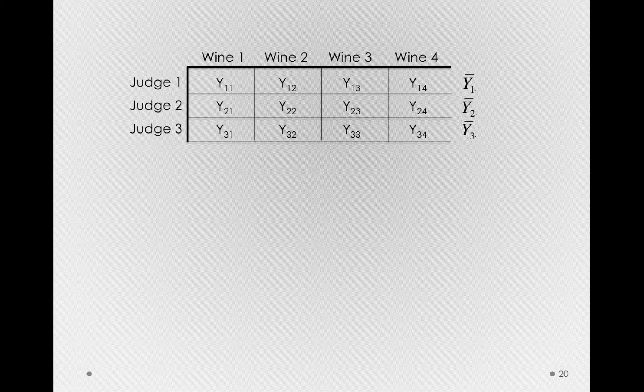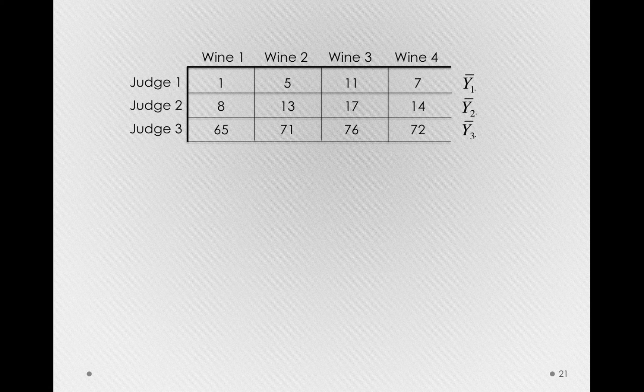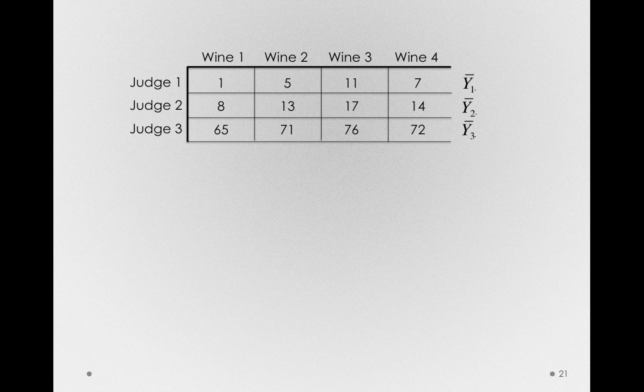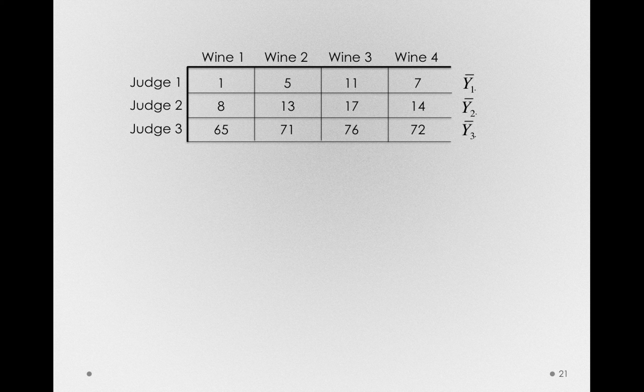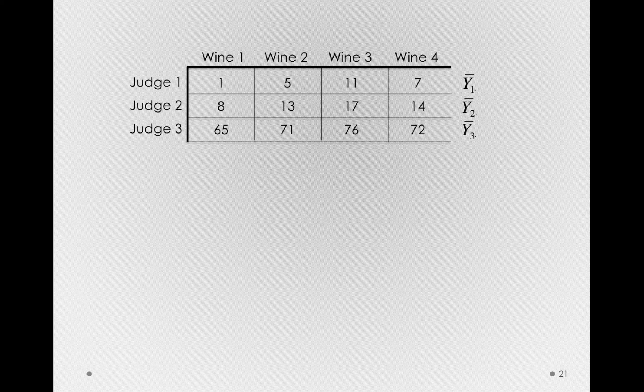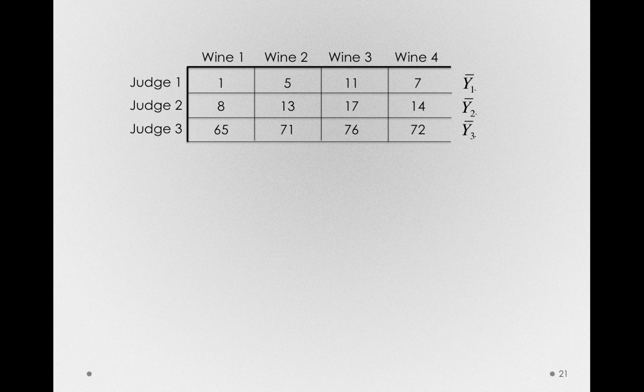Let me give some actual values here. Let's imagine judge one, a very harsh critic of wines, rates all very low: one, five, eleven, and seven. Judge two, still kind of a harsh critic: eight, thirteen, seventeen, and fourteen. And then judge three rates very highly on average: sixty-five, seventy-one, seventy-six, and seventy-two.